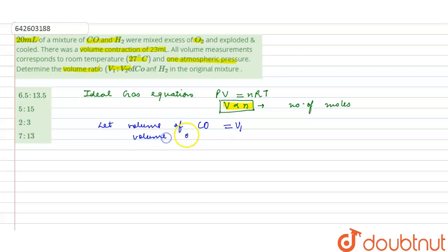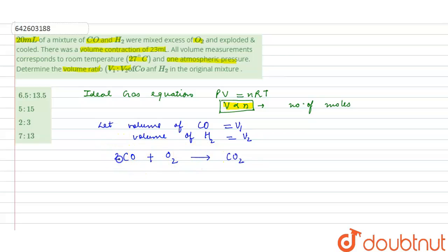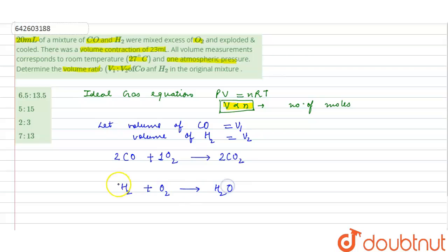When carbon monoxide reacts with oxygen, it forms carbon dioxide. Balancing the reaction: two moles of carbon monoxide react with one mole of oxygen to form two moles of carbon dioxide. Similarly, hydrogen reacts with oxygen to form water: two moles of hydrogen react with one mole of oxygen to form two moles of water.